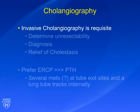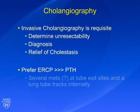Invasive cholangiography is a requisite — we need to determine if it's truly unresectable and to visualize that. Direct cholangiography is still the gold standard. You often need a tissue or cytologic diagnosis, so you need access to the bile duct. Patients are usually jaundiced and you need to relieve cholestasis by stenting.